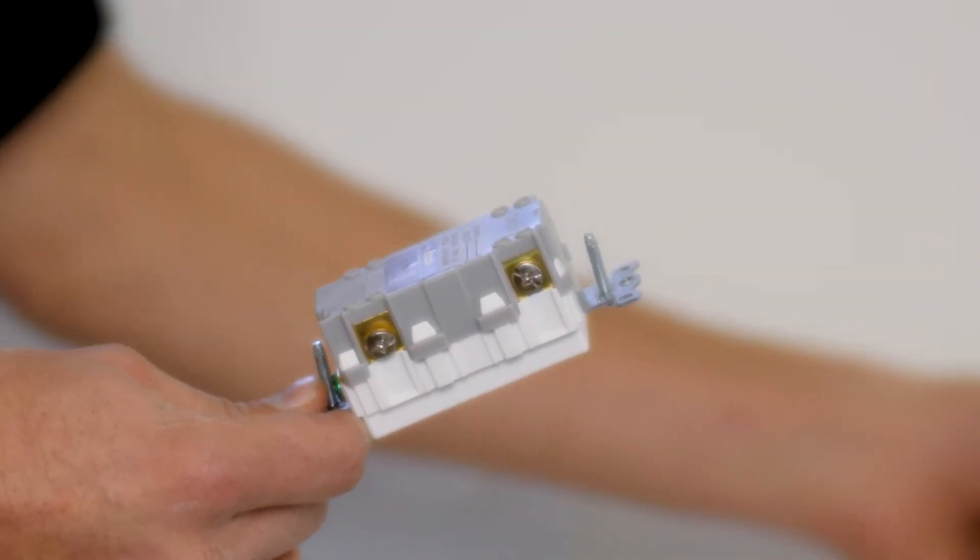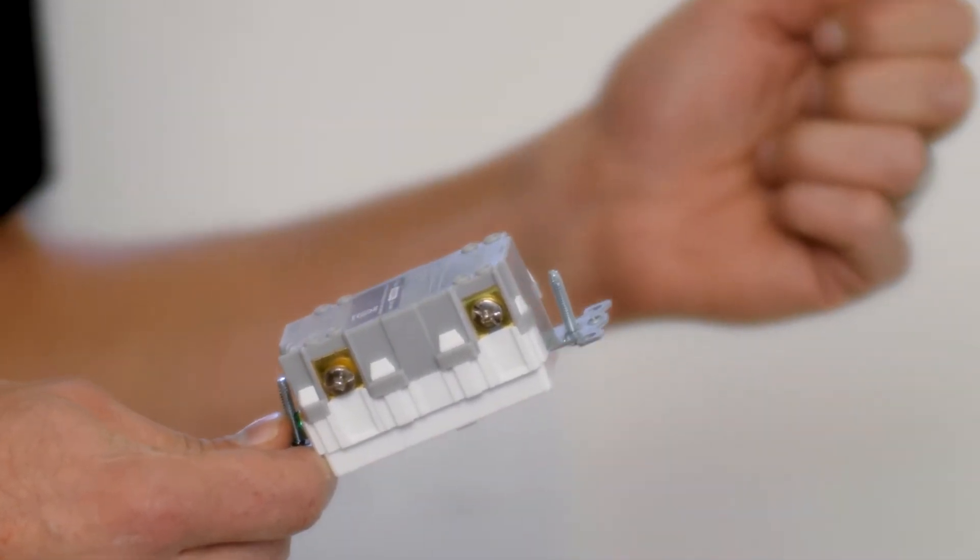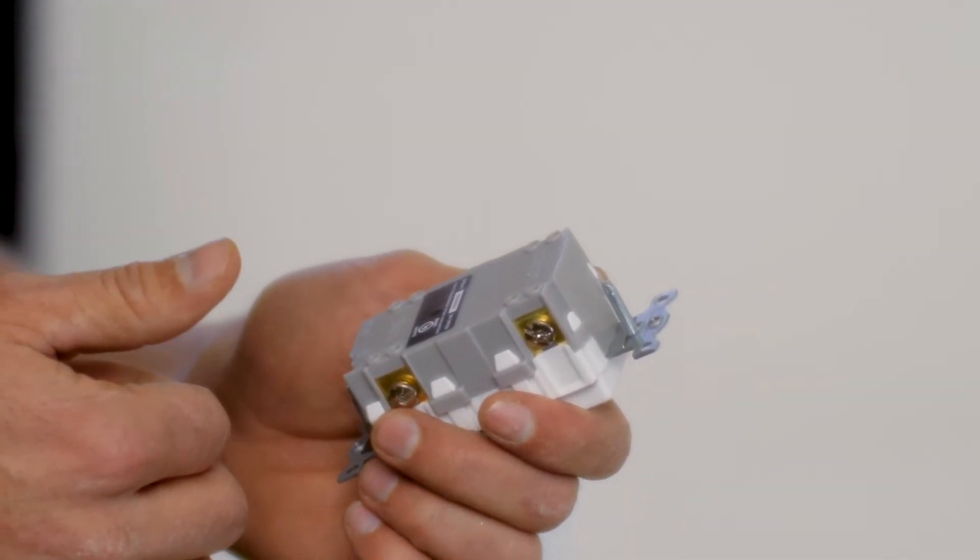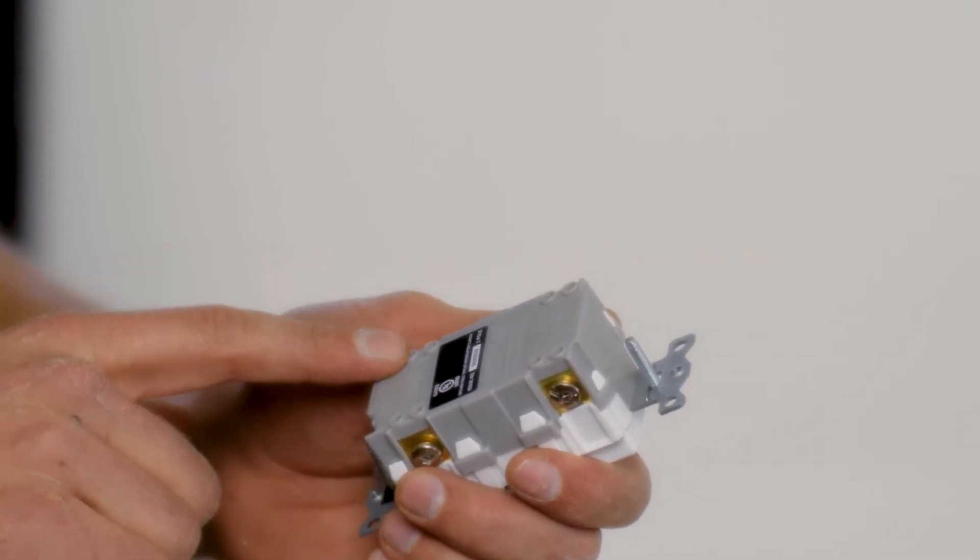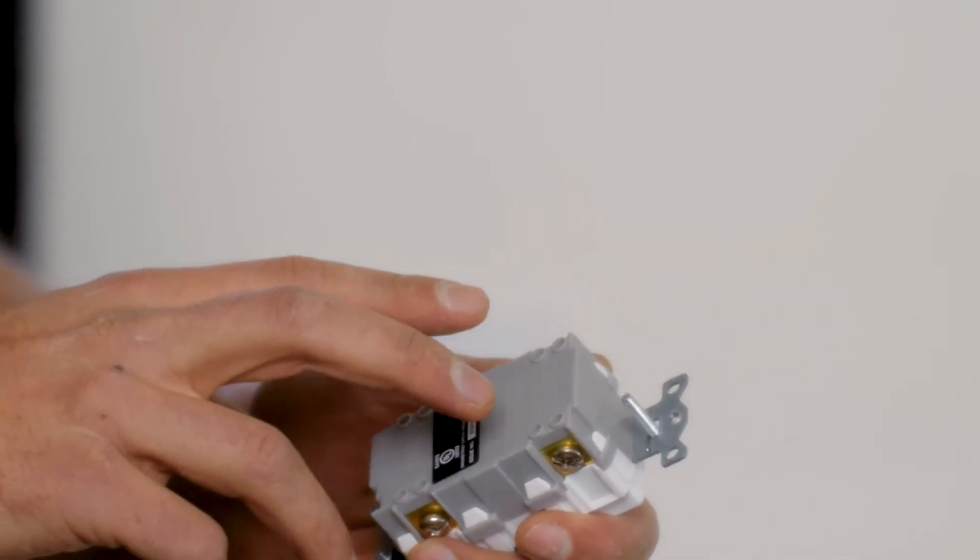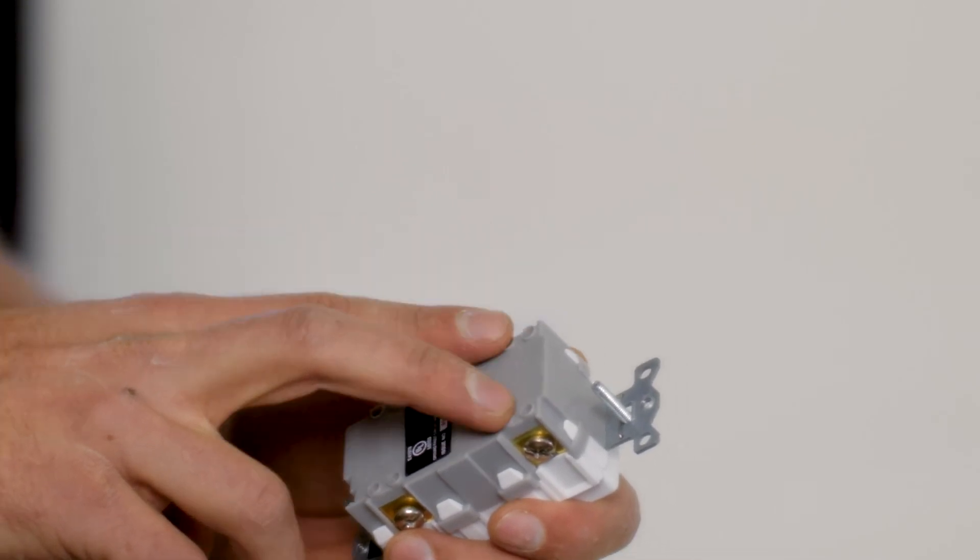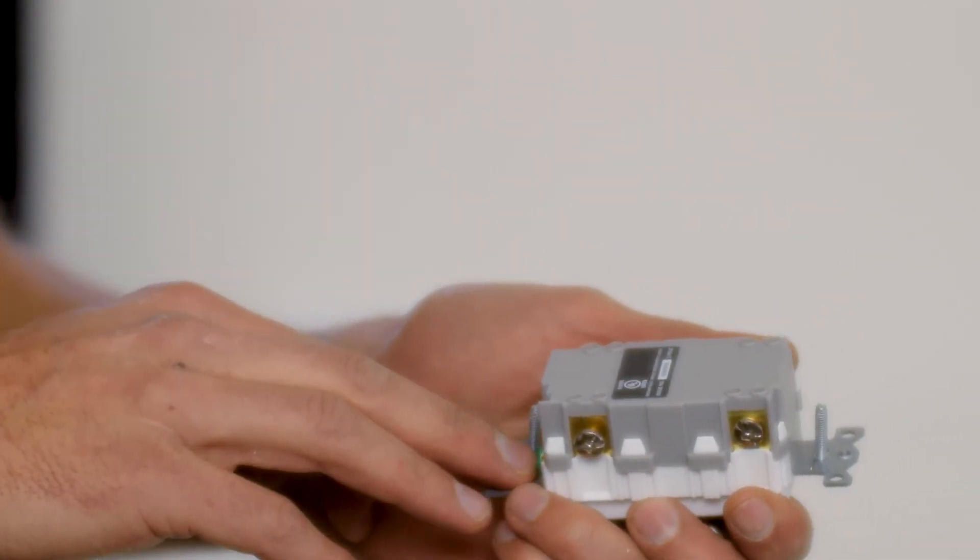In this case, we're going to be combining the grounds, cutting off the two spare grounds, so we'll actually have one set of conductors, one black, one white on the line side, two sets of conductors on the load side to protect the receptacles that are downstream, and one ground.